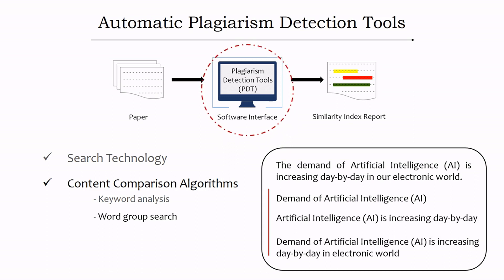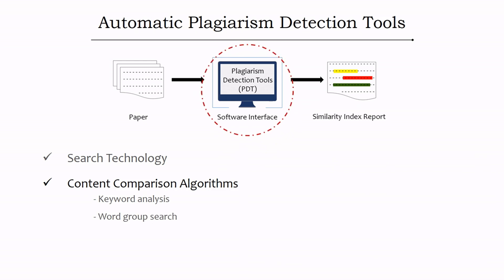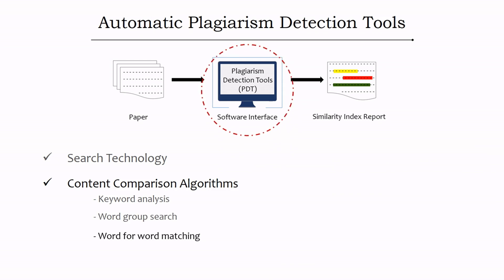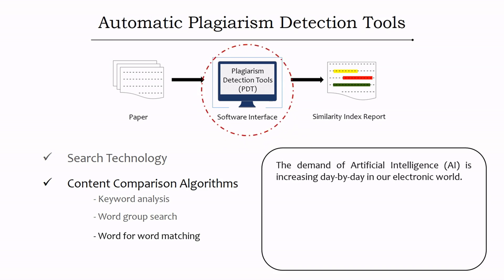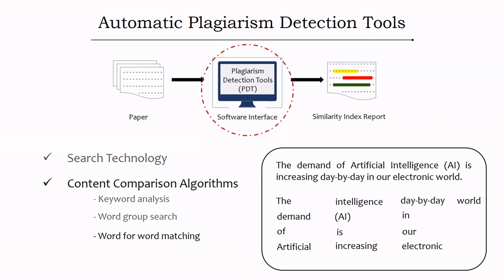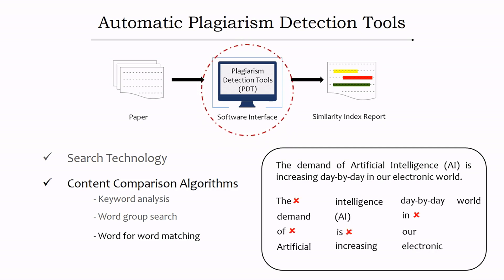The next aspect is word-for-word matching. The tool checks word by word for plagiarized contents. Using the same example sentence, every word is checked for plagiarism. Very common words like articles (a, the) and conjunctions (and, but) are not checked.